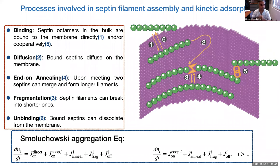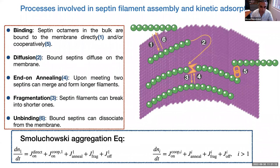To model this system we can't use molecular dynamics because the assembly takes 60 minutes — far beyond any structural mechanical model. Instead, we use the Smoluchowski aggregation equation to develop a kinetic model, where mechanical effects enter implicitly through kinetic constants rather than being resolved directly.